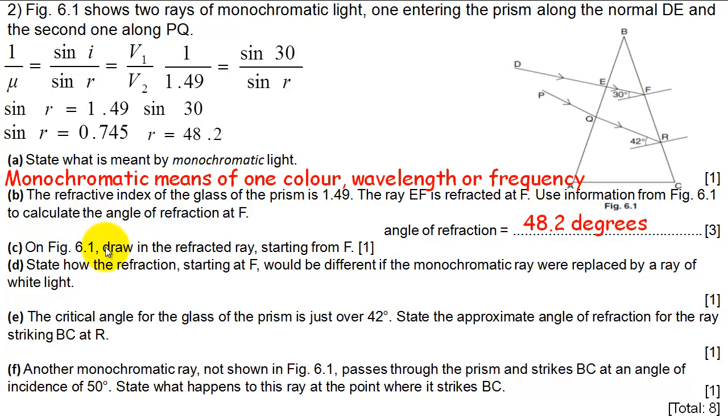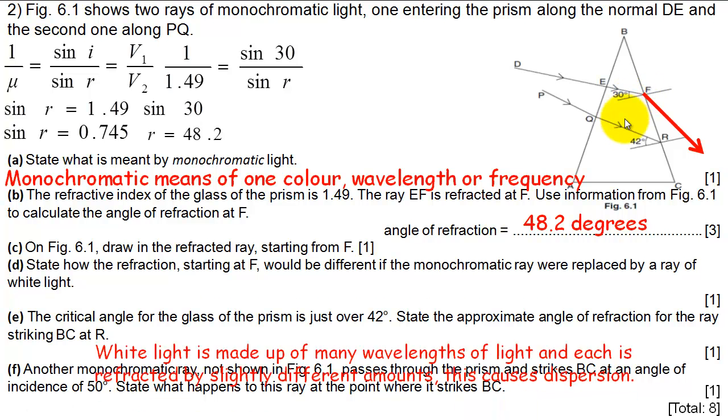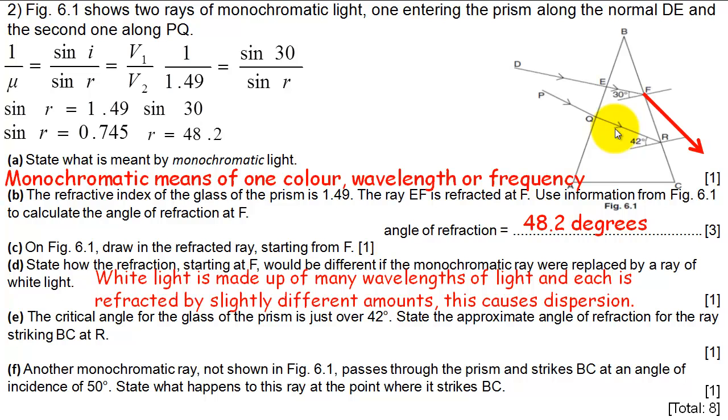On the figure, people always miss these for some reason, part C. It says draw in a refractive ray starting at F. So we're just looking for a ray that's going to have a bigger angle than the normal line. You could measure it 48.2 degrees using your protractor. State how the refraction starting at F would be different if monochromatic ray were replaced by a ray of white light. As it escapes here, because white light is made up of all the colours, you will get dispersion happening, and all the colours of the rainbow would then show up. Blue light gets refracted more than red light, and it spreads out the colours.